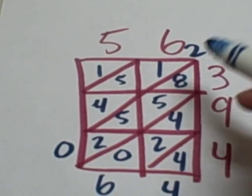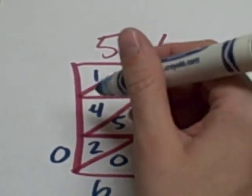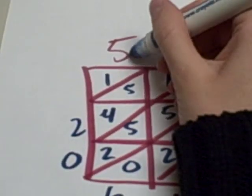2 plus 1 is 3, plus 5 is 8, 4, 12, carry the 1, 2.